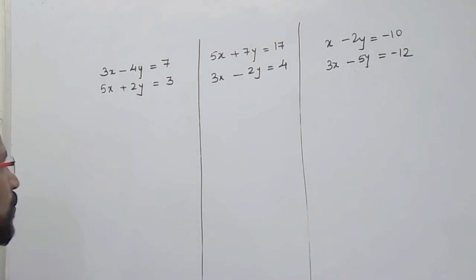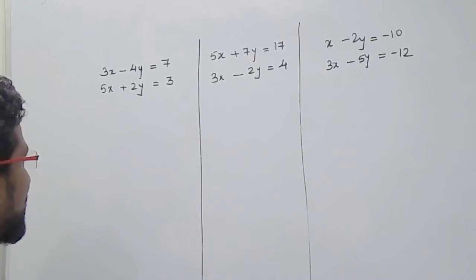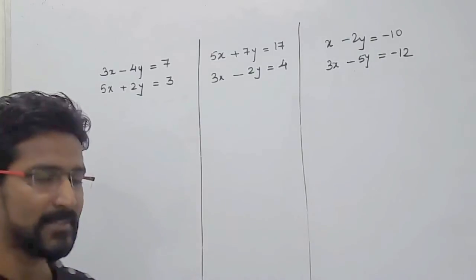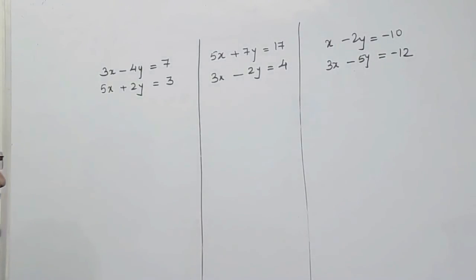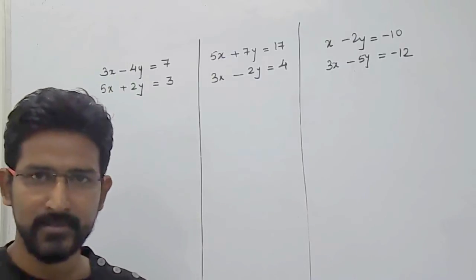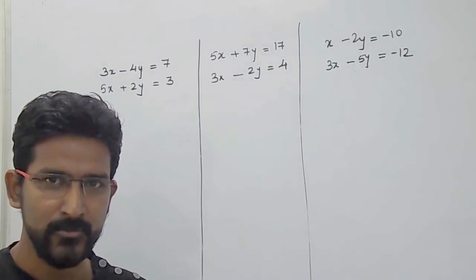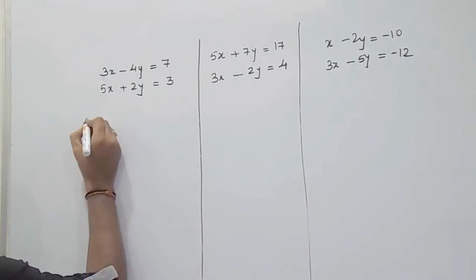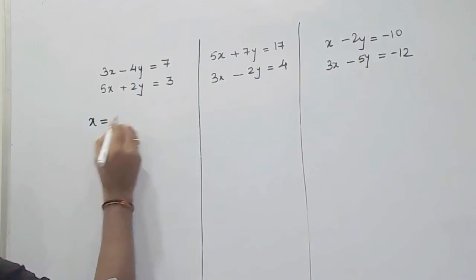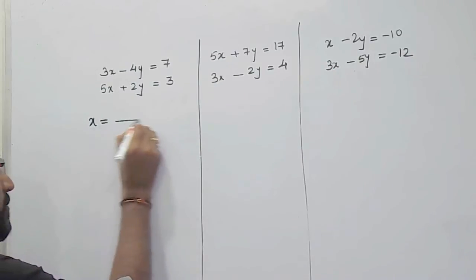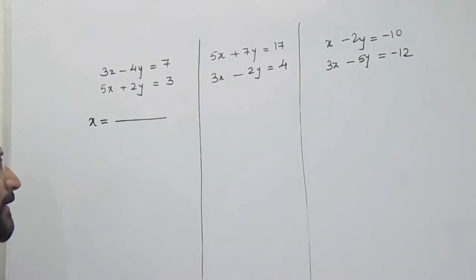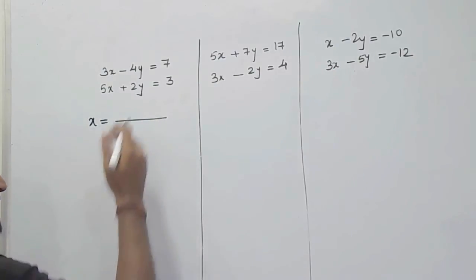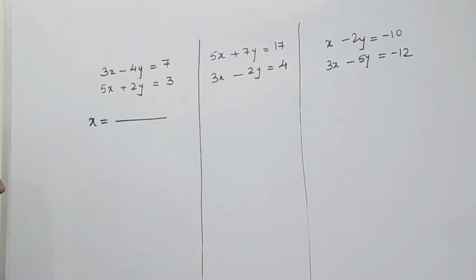For example, you want to solve the simultaneous equation: 3x minus 4y equals 7 and 5x plus 2y equals 3. To find out the value of x, x is equal to — we divide it into two parts: numerator and denominator.